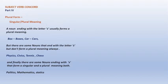Now the problem comes: there are some words the spelling of which end with the letter 's'. Normally a noun ending with the letter 's' usually forms a plural meaning like box-boxes, car-cars, but there are some nouns that end with the letter 's' but don't form a plural meaning always. Which are those words? They are often names of subjects, names of games like tennis, chess.